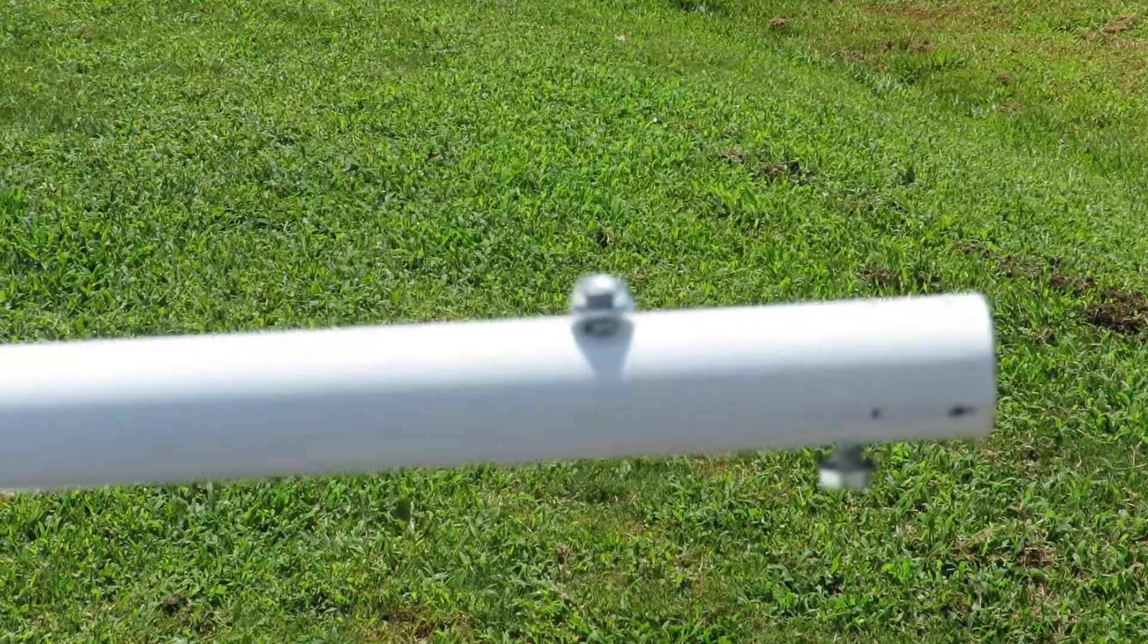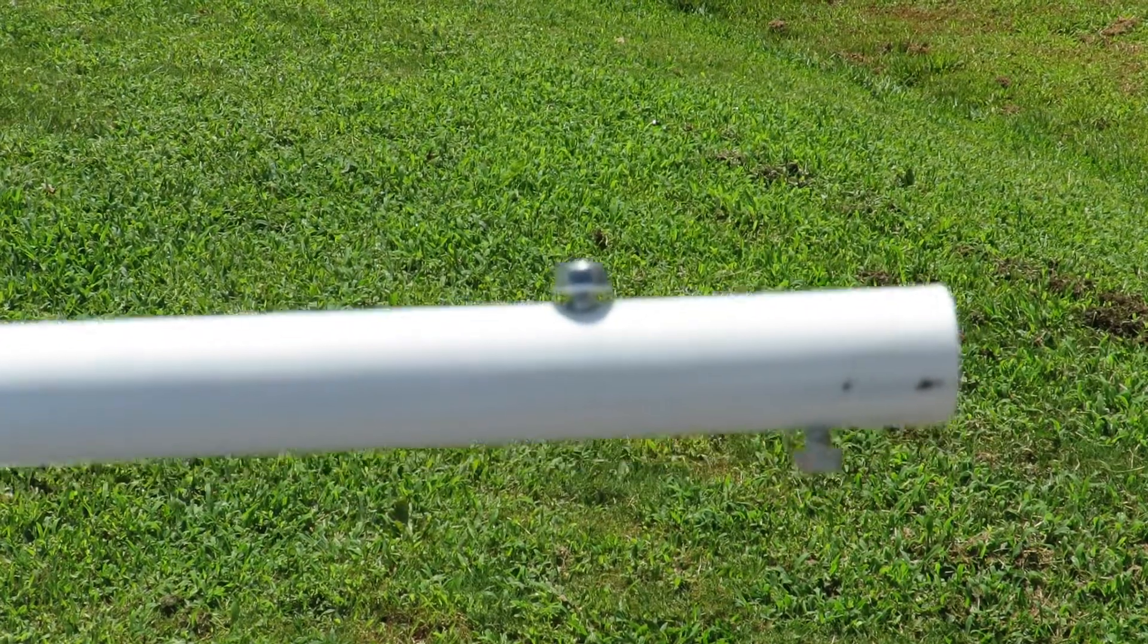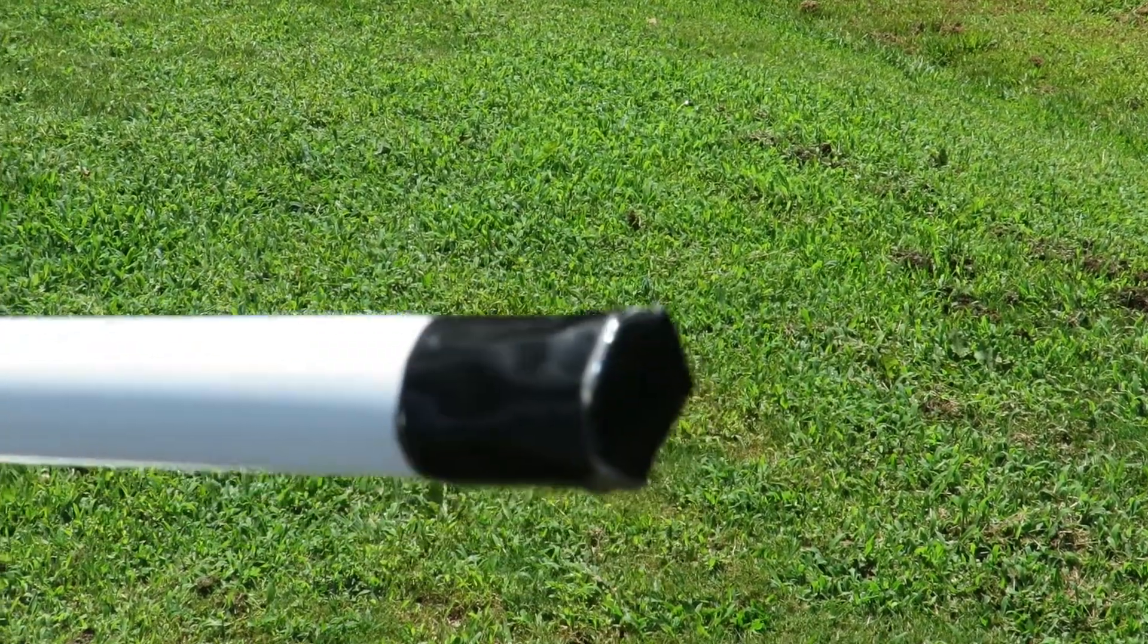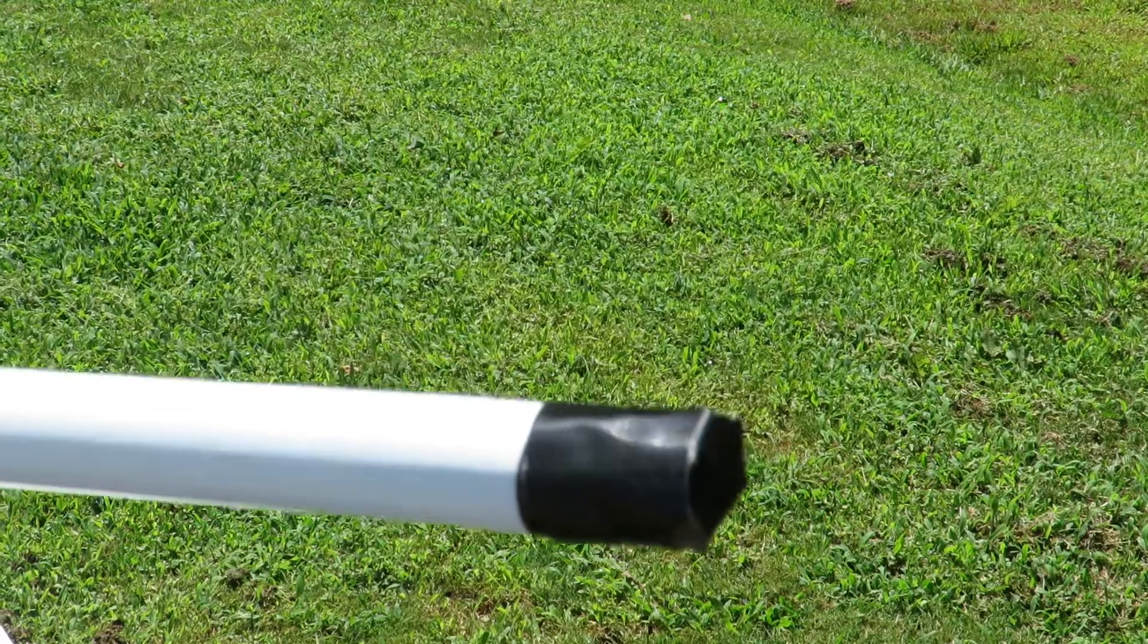Then at the same end of the pole but on the opposite side, measure two inches in and put another screw. Again, leave 1⁄8 inch sticking out. I add gorilla tape to the other edge to keep dirt from getting inside the pole.